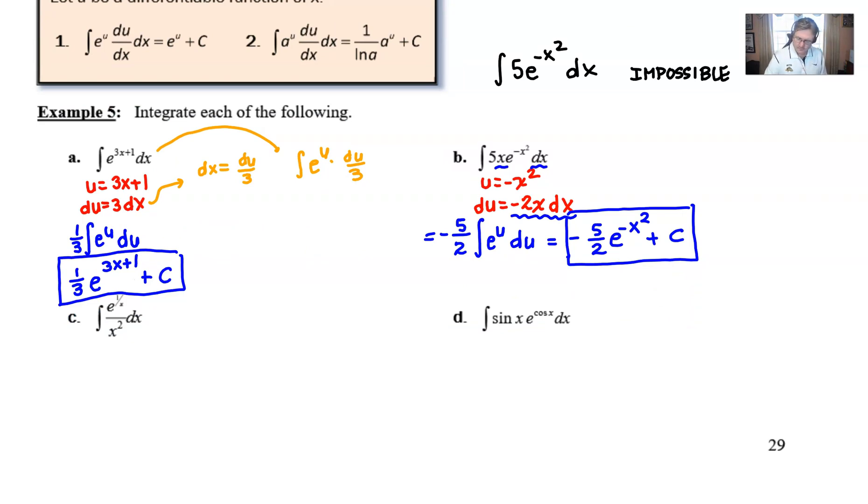Let's take a look at example C. In this case, it's no secret, once again, that your u is going to be the exponent of e. So, the derivative of 1 over x. Think of this 1 over x as x to the negative 1. Now, remember, you're doing a derivative. You're performing a derivative calculation.